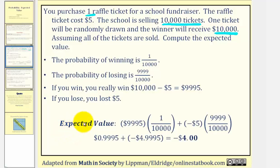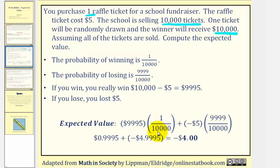The expected value is going to be equal to the outcome of winning times the probability of winning, plus the outcome of losing times the probability of losing. So if we win, we win $9,995 and the probability of this occurring is 1/10,000. If we lose, we lose $5, and the probability of this occurring is 9,999/10,000. We find each product and then find the sum to get the expected value.